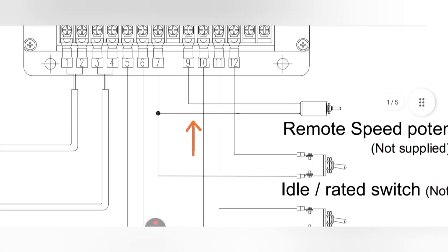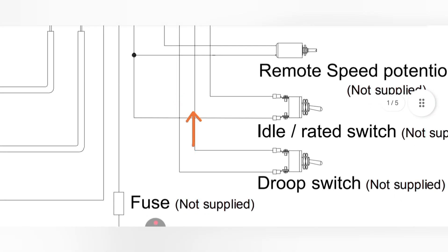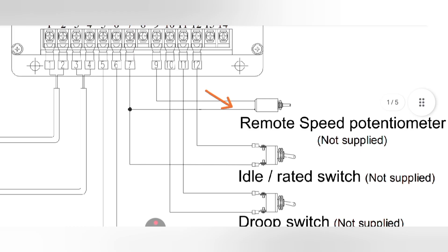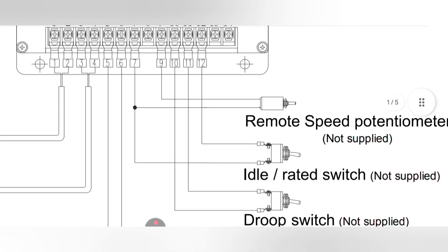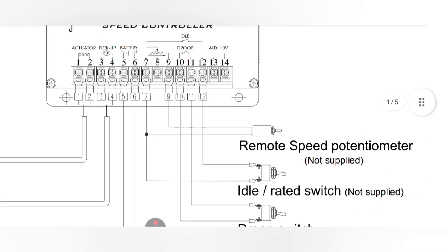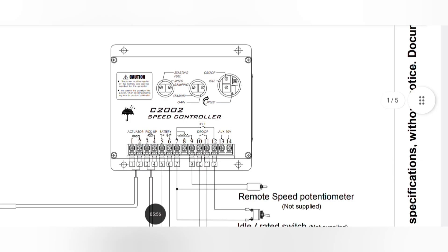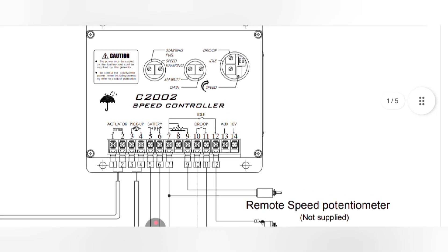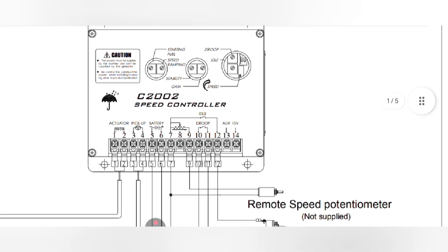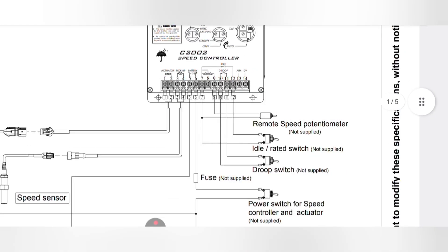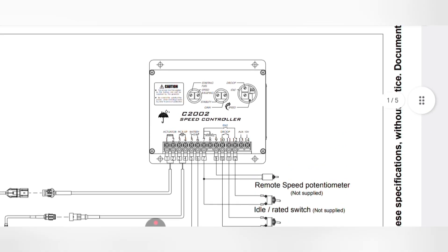Pin number ten and pin number eleven are for the idle-rated switch, controlled manually by toggling the idle speed on and off. Idle speed means a larger generator must first start at a lower RPM — for example, if the rated RPM is 1800, we first run it at around 800 RPM for one to one-and-a-half minutes, then close the toggle switch to let the speed ramp up automatically.